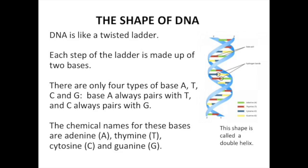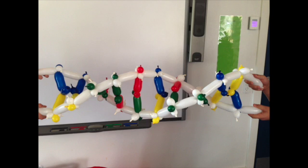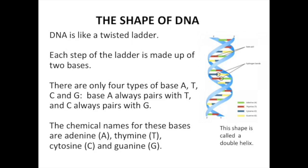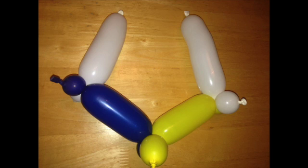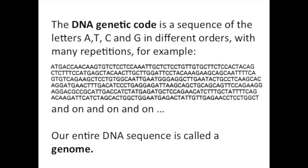DNA is like a twisted ladder. Each step of the ladder is made up of two bases. There are only four types of base: A, T, C, and G. Base A always pairs with T, and C always pairs with G. The DNA genetic code is a sequence of the letters A, T, C, and G in different orders with many repetitions.